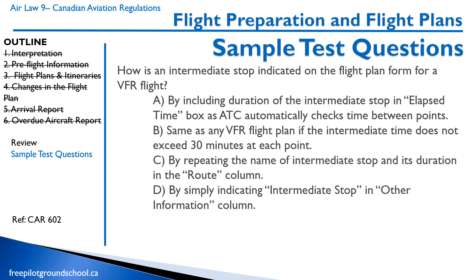How is the intermediate stop indicated on the flight plan form for a VFR flight? A, by including duration of the stop in the elapsed time box as ATC automatically checks between points — no, they don't. B, same as any other VFR flight plan if the stop does not exceed 30 minutes — no. C, by repeating the name of the intermediate stop and its direction in the route column. D, by simply indicating intermediate stop and other information. The correct answer is C — by repeating the name in the route column.